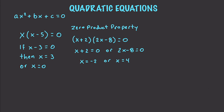One thing that's important to understand is if you have x squared equal to 9, then x would be plus or minus the square root of 9, and x would be equal to plus or minus 3. Always remember whenever you take the root of both sides to use plus or minus.